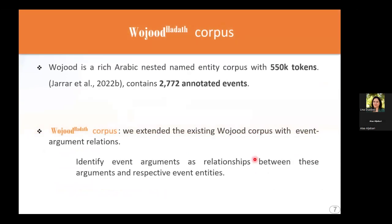Thank you, Alaa. Wujud Hadath corpus is the corpus we developed for event-argument relations. Before discussing it, I want to identify the original Wujud corpus that we extended. Wujud is a rich Arabic nested named entity corpus containing 550,000 tokens and 2,772 annotated events. We extended the Wujud Hadath corpus from this by identifying event arguments as relationships between these arguments and their respective event entities.